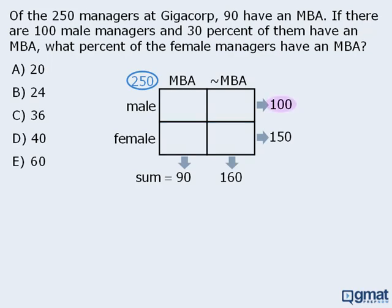We know that there are 100 male managers altogether, and we are told that 30% of them have an MBA, so 30 of the male managers have an MBA. At this point we can complete the rest of the table. Since these two boxes add to 100 and one has 30 managers, the other must have 70. Since these two boxes add to 160 and one has 70, the other must have 90. Finally, these two boxes add to 90 and one has 30, so the last box must have 60 managers.